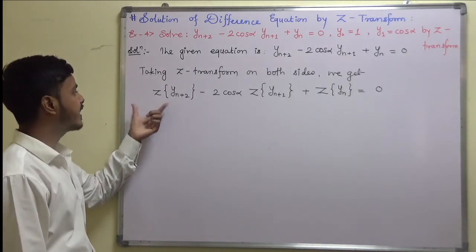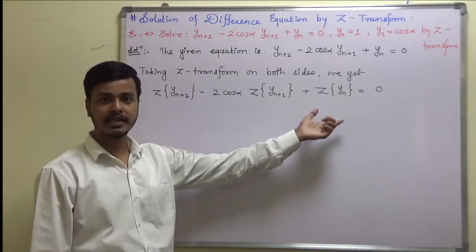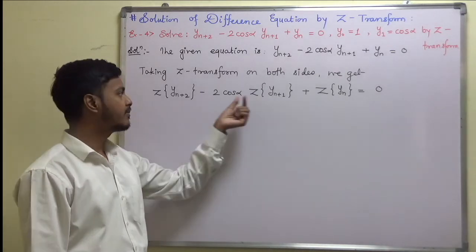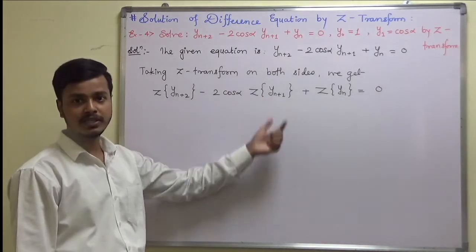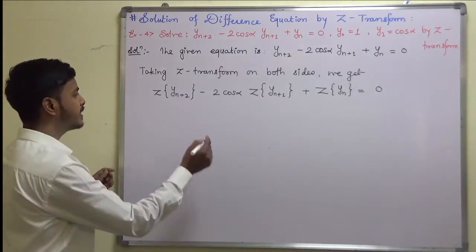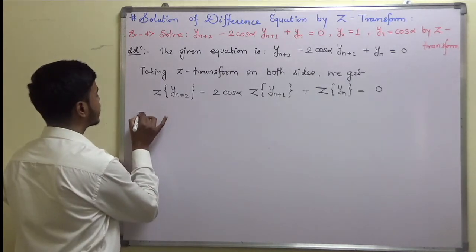While taking the Z-transform, we have applied linearity property by taking constants outside and taking Z-transform of the sequence of functions. Now, what are the sequences?